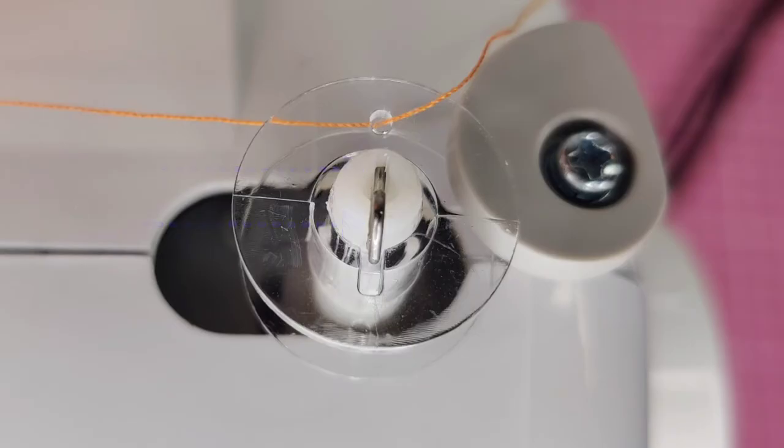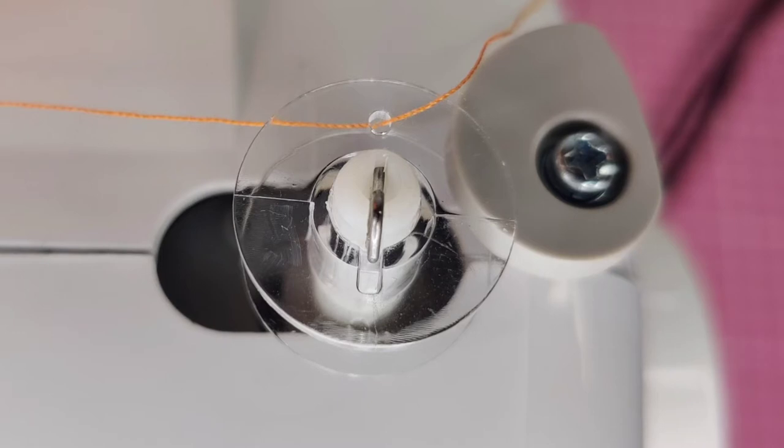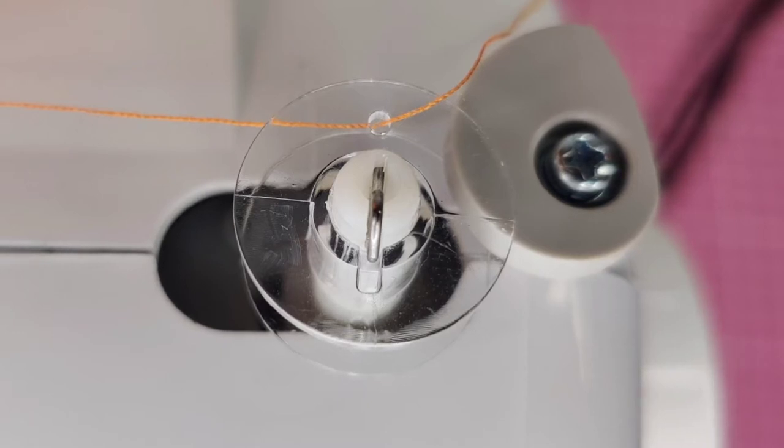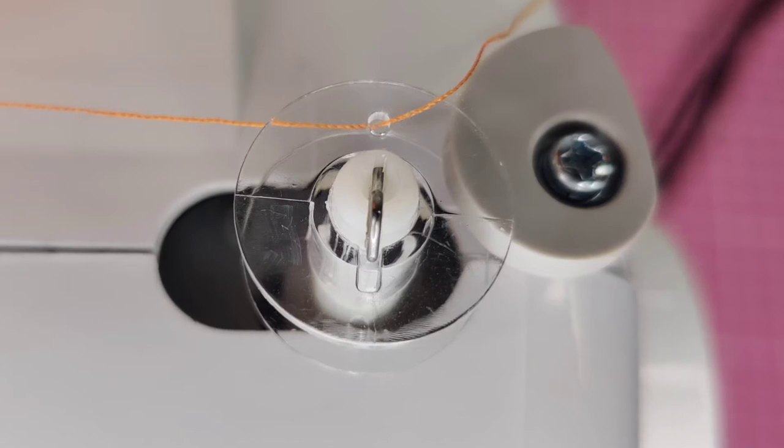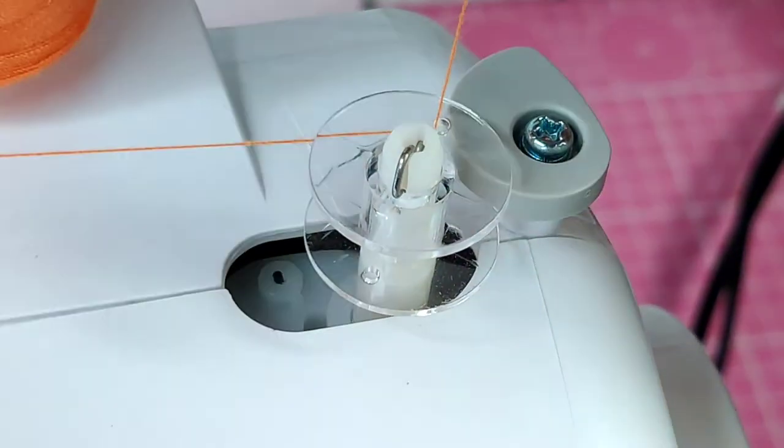If you forget to do this, since the bobbin is not locked in place, it can easily slide off a few millimeters from its correct position. This will cause the thread to be wound on the bobbin winder shaft instead of the bobbin itself. This has happened to me quite a few times so remember to do this step when winding your bobbin.